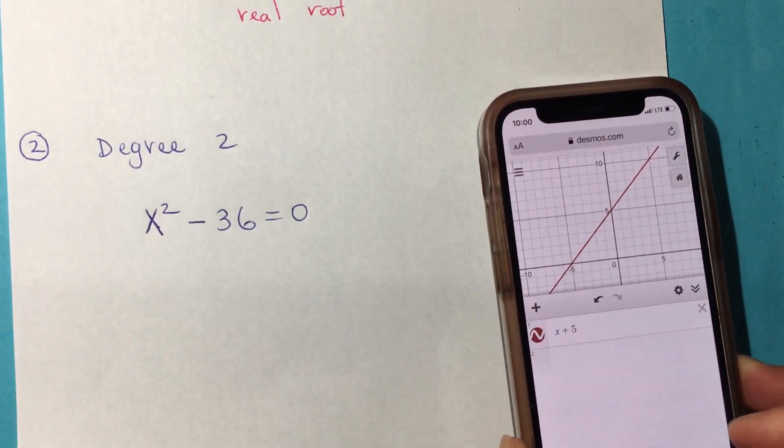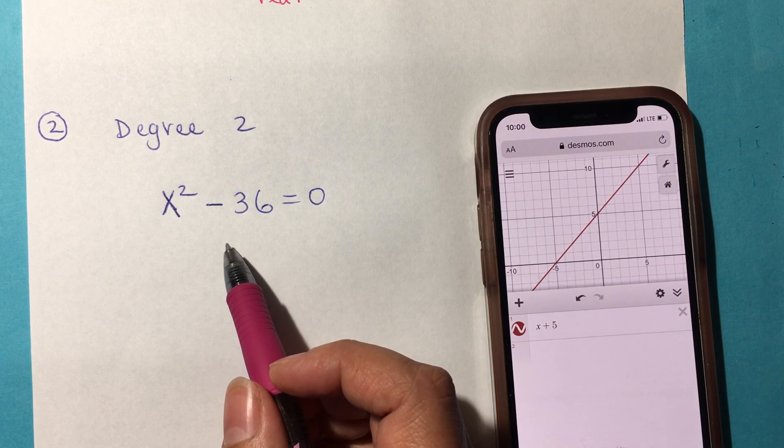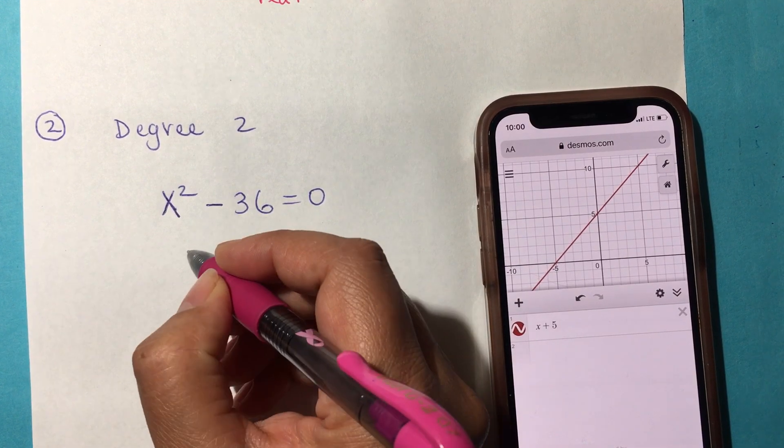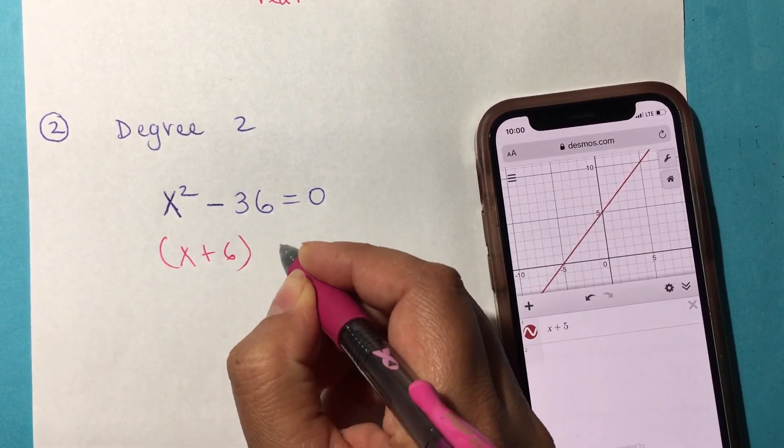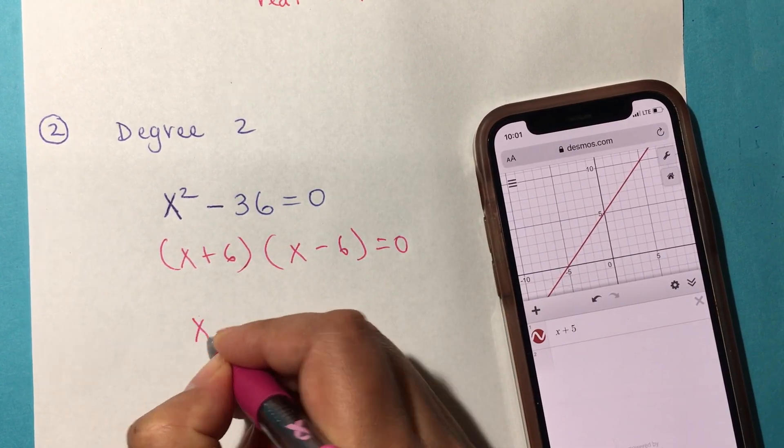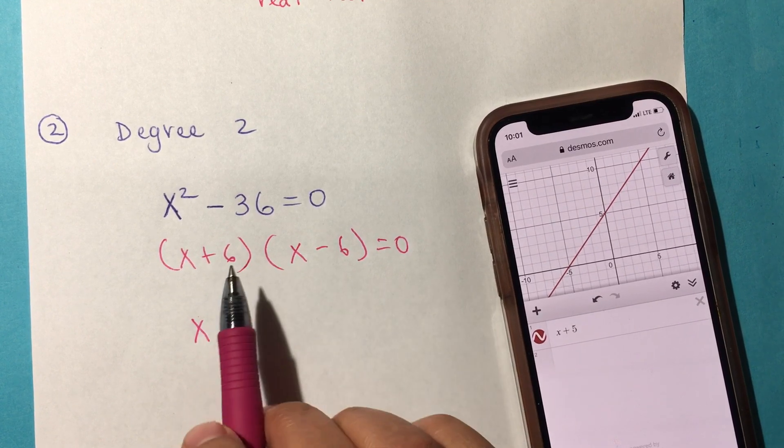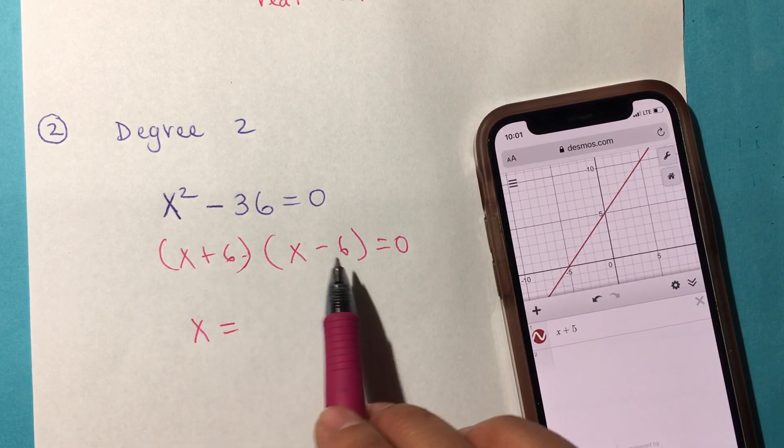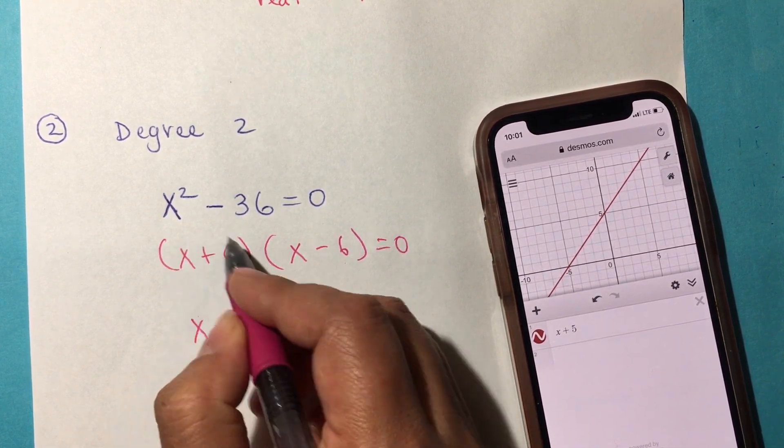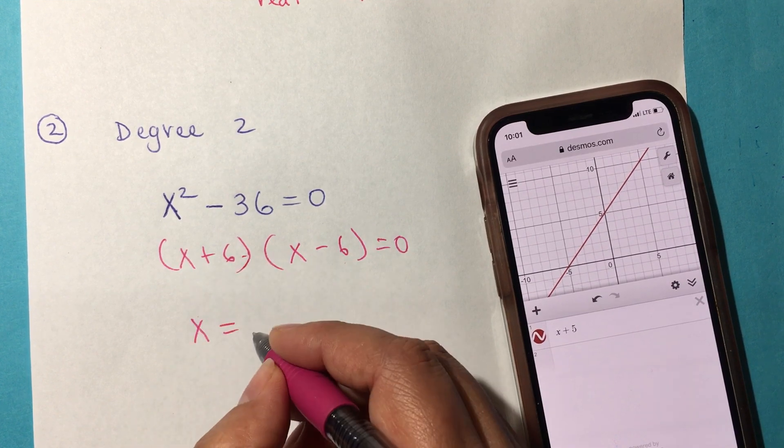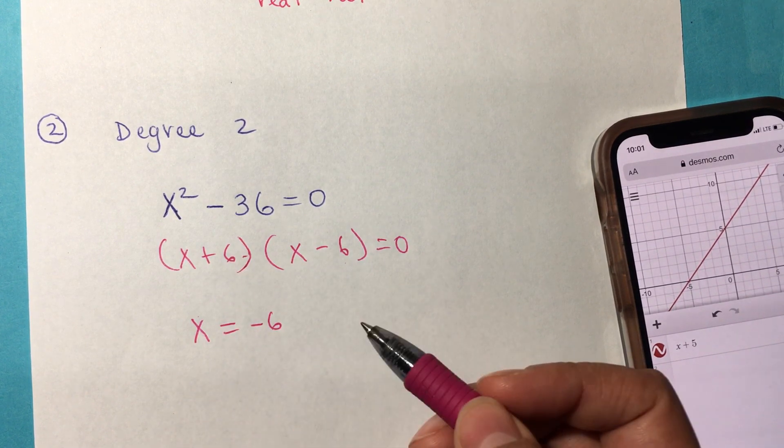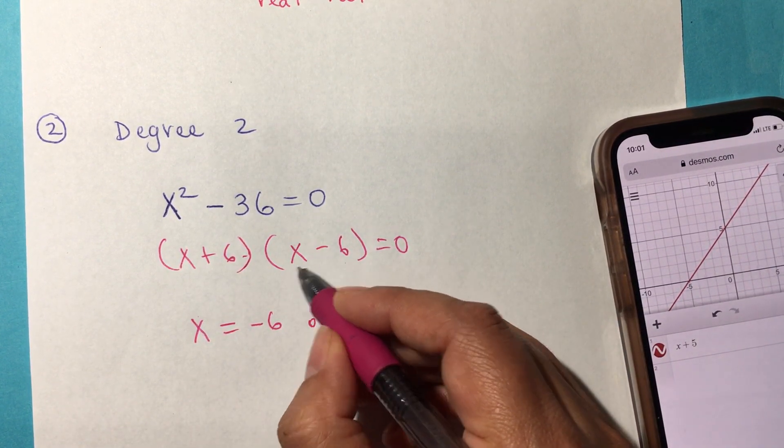For number 2, we can solve it in different ways. We can use factoring with the difference of squares, meaning x + 6 times x - 6 equals 0. When we multiply to get 0, one of them has to be 0. How do I make this factor 0? x would have to be negative 6, so negative 6 + 6 is 0.